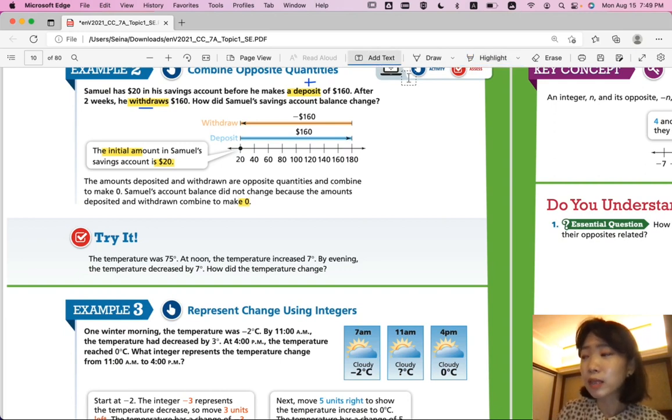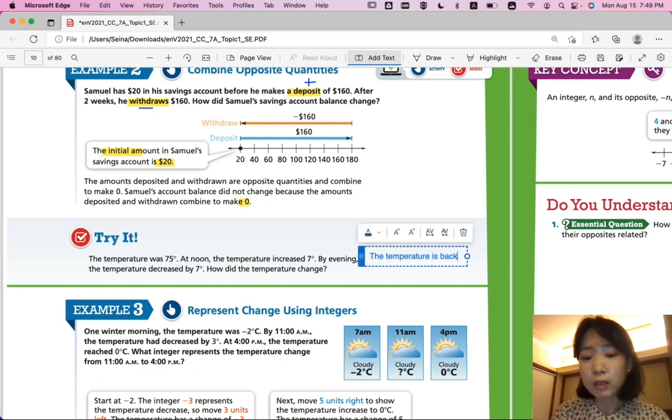So it's the same as example two here. The change is that it didn't change at all. If it goes up 7 and comes down 7 again, then it's back to normal. Back to where it started, 75 degrees. So the temperature is back to 75 degrees.